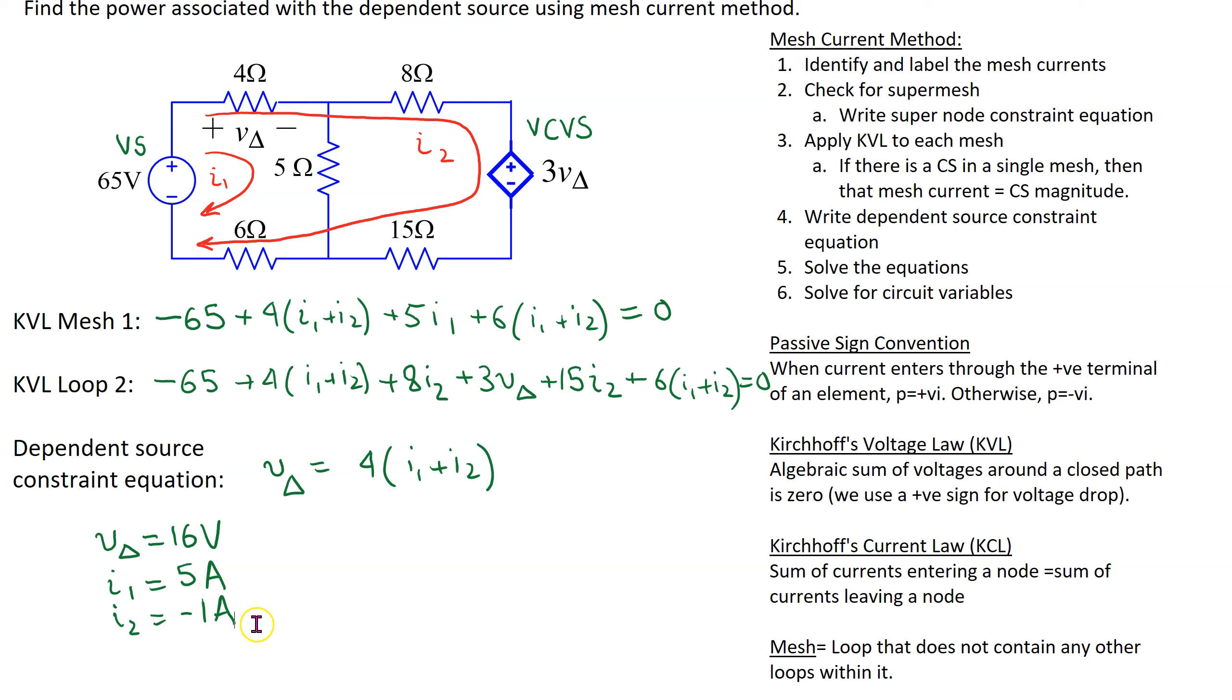Using these currents and voltages we can now find the power associated with the dependent source. So the power associated with the voltage controlled voltage source is the product of the voltage which is 3 V delta and the current, the current flowing through here is I2. Since I2 is entering the terminal marked plus, we write the power calculation with a positive sign following passive sign convention.